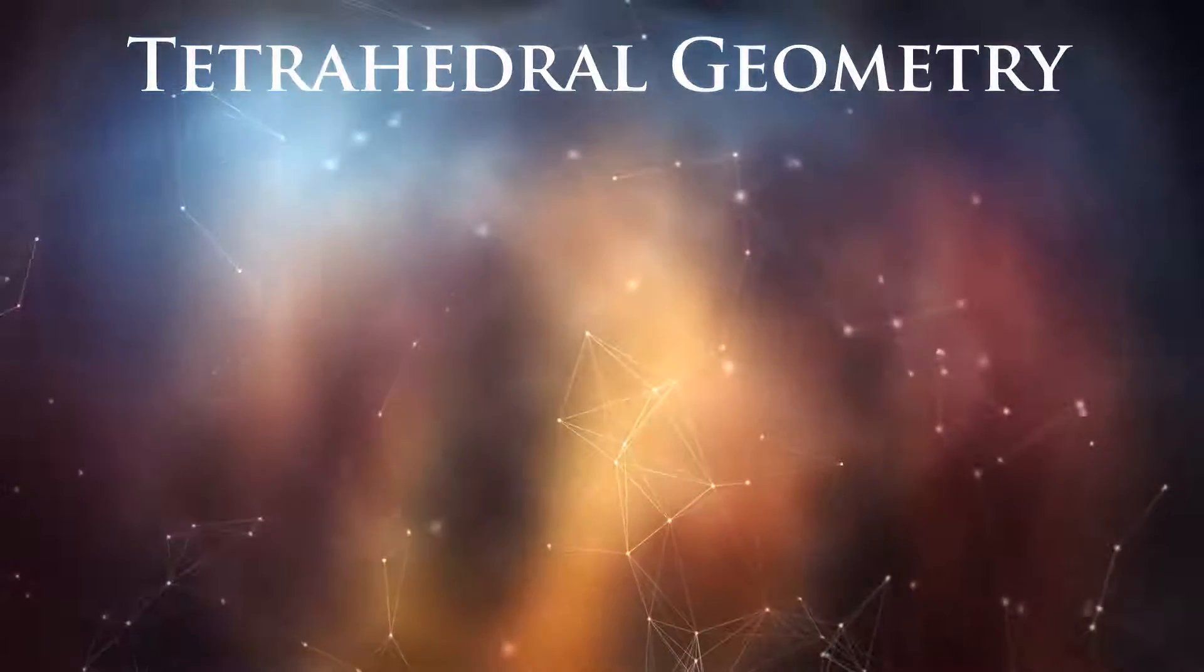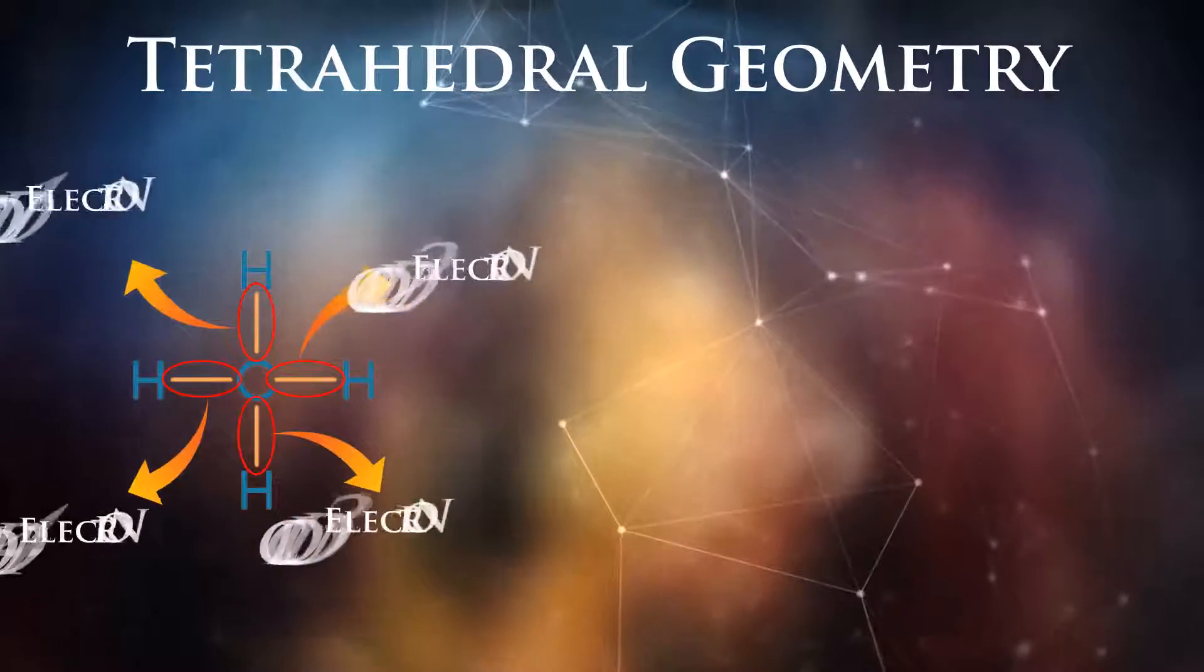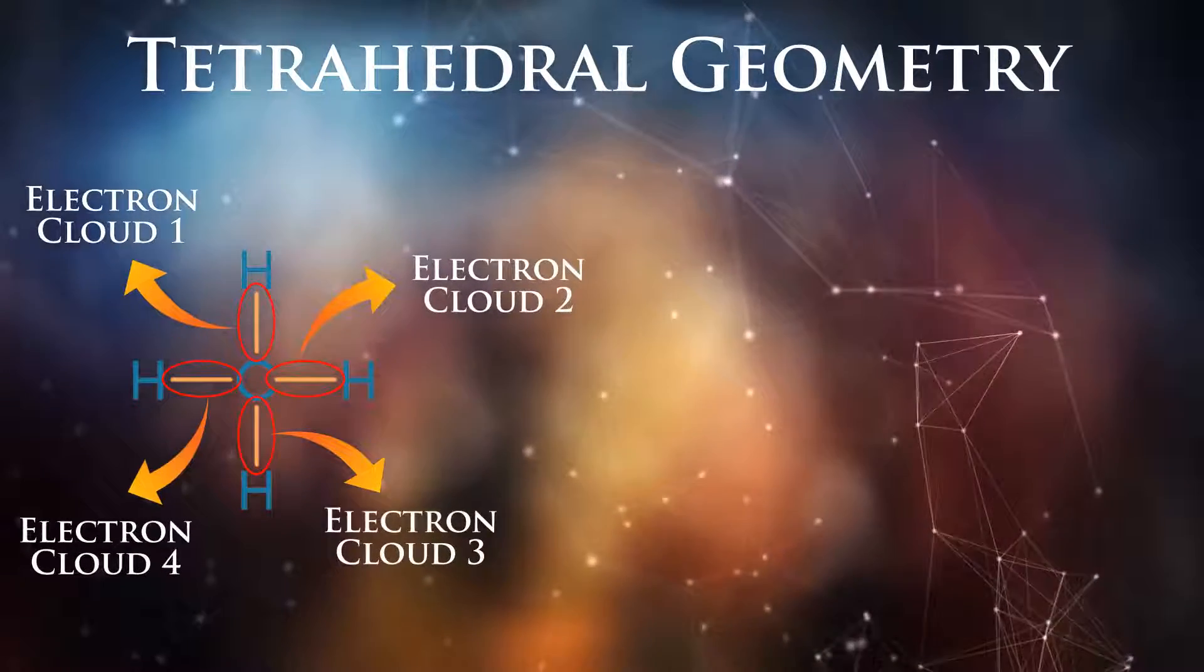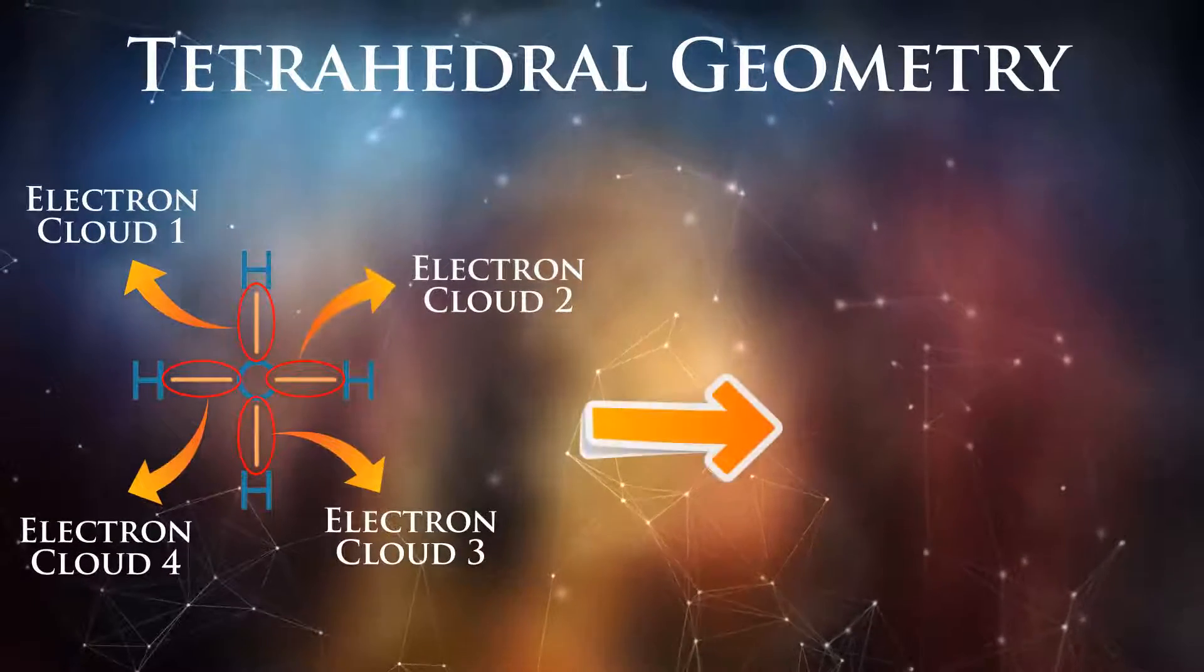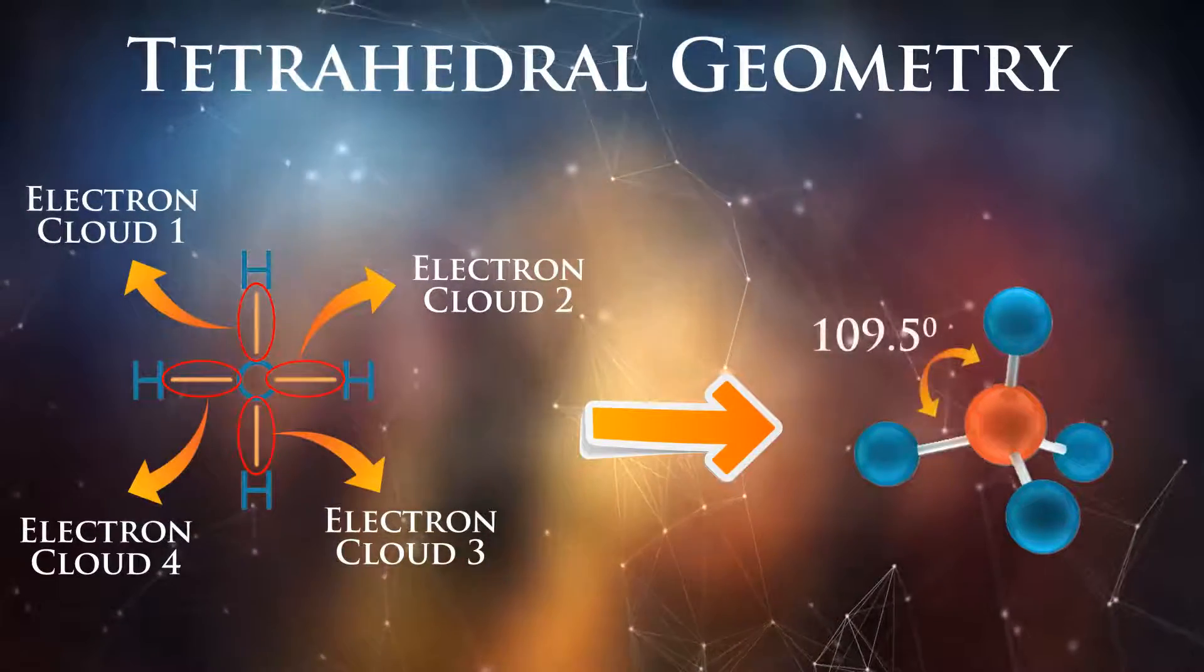If a molecule has four electron clouds around its central atom, its 3D structure will take tetrahedral geometry, which has an angle of 109.5 degrees between each two electron clouds.